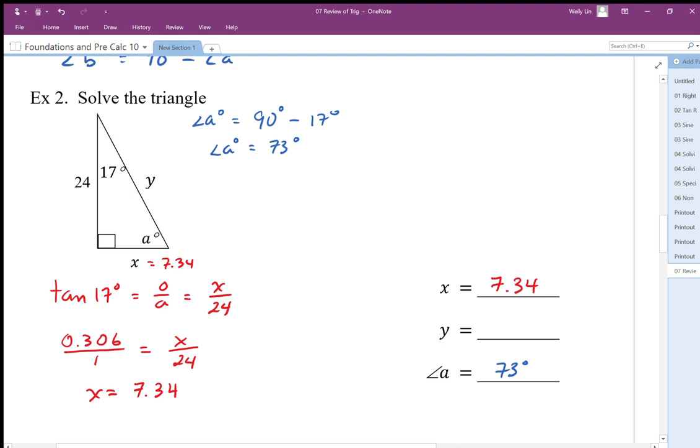I can solve for the length of y using Pythagoras, or I can use another trig ratio. I think maybe I'll just use a trig ratio to solve for y. So I'm going to involve the adjacent and hypotenuse—adjacent hypotenuse is CAH. So I'm going to use cosine.